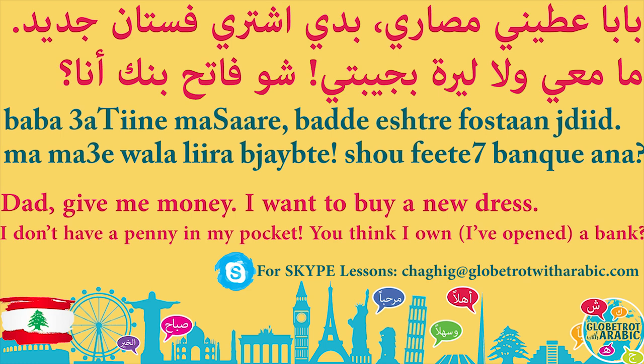Ma ma'i wala liira b'jaybteh. Ma'i literally means with me — ma'a means with, ma'i means with me. But in this context, ma'i means I have — more specifically, I have on me in this moment. Ma ma'i means I don't have, I don't have on me in this moment.